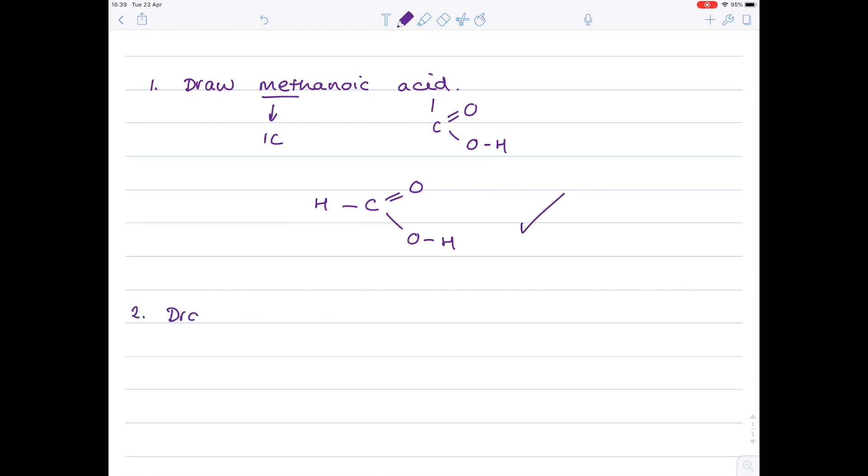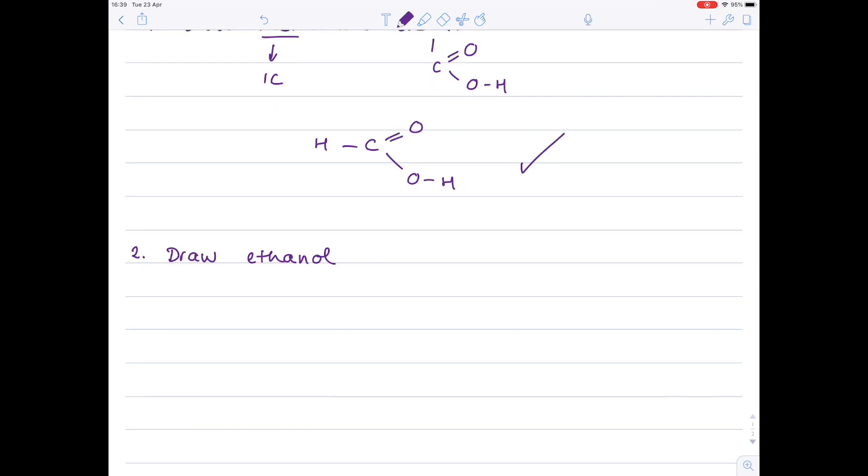Question 2, draw ethanol. Okay so this time we have an alcohol which means we have an OH functional group. We have eth which means it's two carbons. So the final answer will look like this.